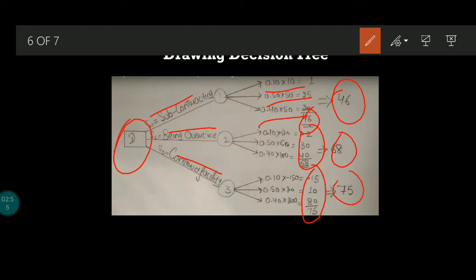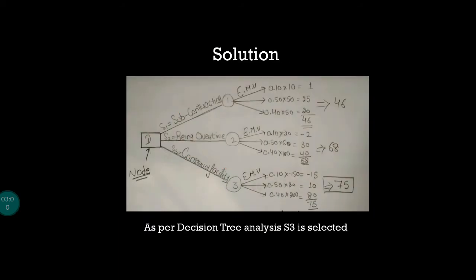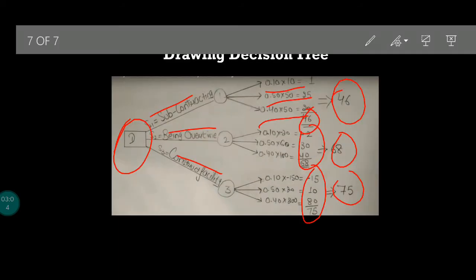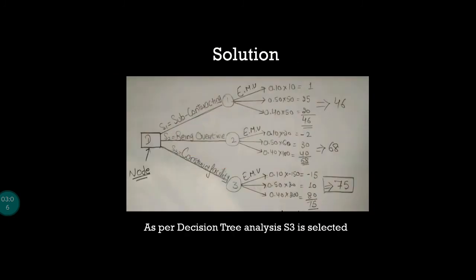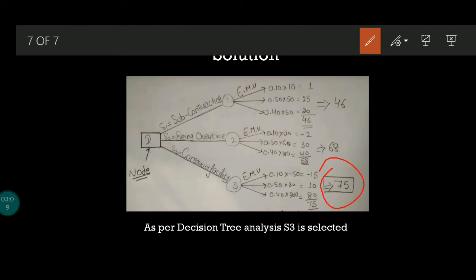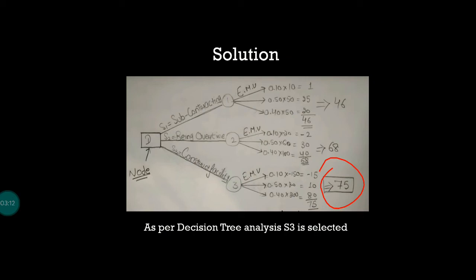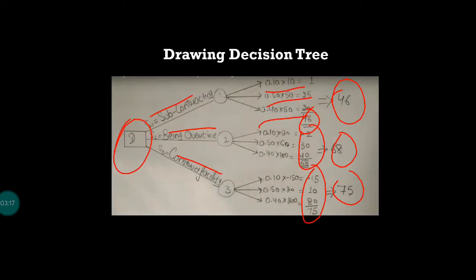As a solution, you have to find the maximum one. The maximum here is 75. So as per the decision tree analysis, the S3 strategy will be selected.